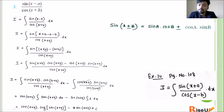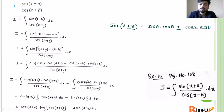We apply the formula sin(A minus B) = sin A cos B minus cos A sin B. Here A = (x+b) and B = (a+b). So sin((x+b) minus (a+b)) expands to sin(x+b)·cos(a+b) minus cos(x+b)·sin(a+b). This is placed over cos(x+b) in the denominator, and we split into two separate integrations with respect to x.